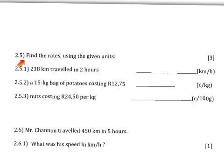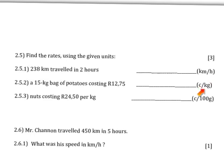Question 2.5: we are asked to find the rates using the given units shown in the question. On the right are the different rates. Rates are just two different quantities — one quantity per another quantity — for example, kilometers per hour, cents per kilogram, cents per 100 grams.